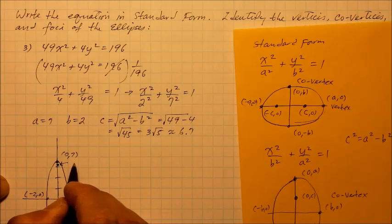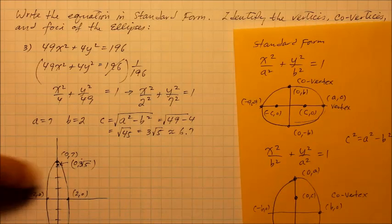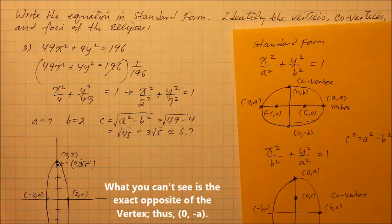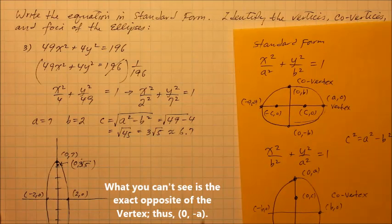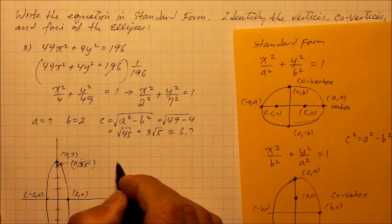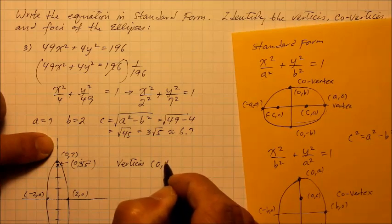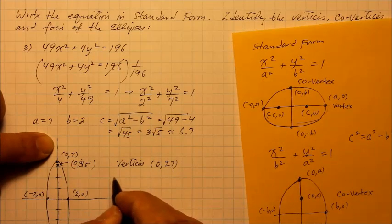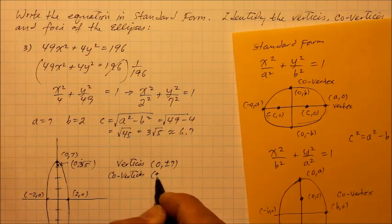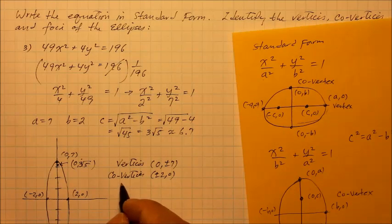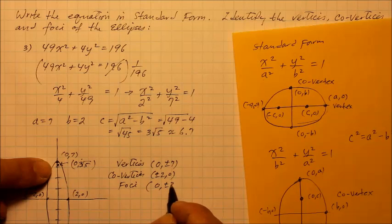And what's my foci? Approximately 6.7, 2, 4, 6, somewhere right there and the coordinate for that foci is of course 0 and 3 square root of 5. I like to leave it like that, that's a radical over here. That's going to be 0 and negative 3 square root of 5. So I'm going to list all my answers. My vertices are coordinate 0 and plus and minus 7. My co-vertices are positive and negative 2 and 0. And my foci, their coordinates are 0 and plus or minus 3 square root of 5.